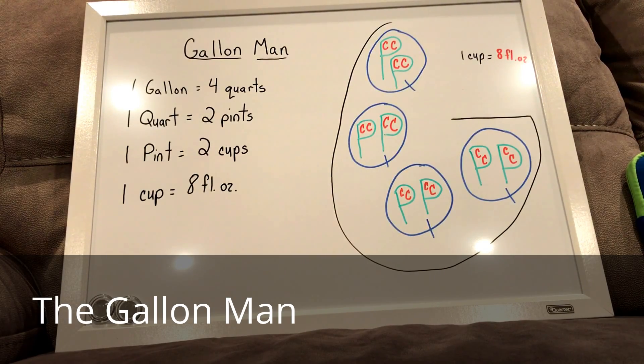So, and once again, if you know that there are eight fluid ounces in one cup, you could answer the question of how many fluid ounces are inside of one gallon. And you would just count up, well, how many C's are inside of my gallon?